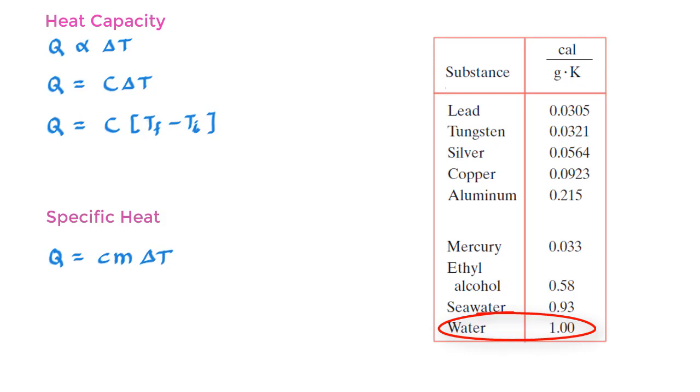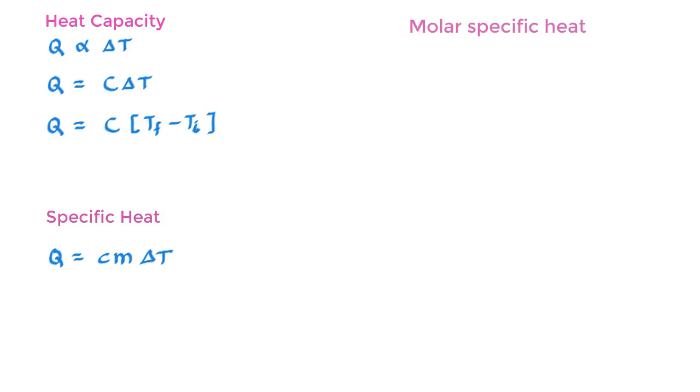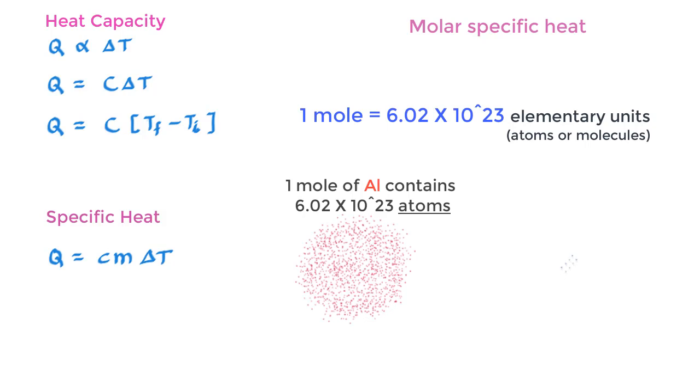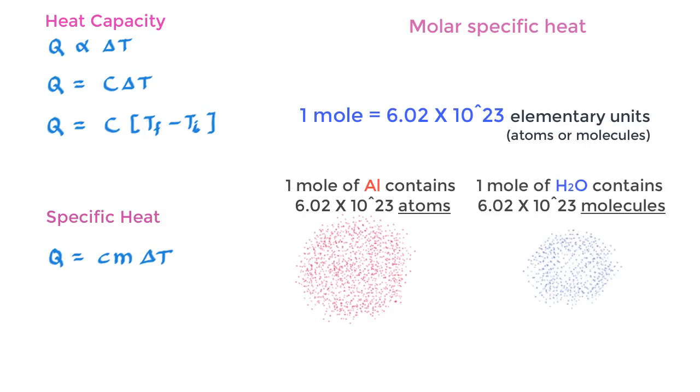Molar specific heat is yet another way of expressing heat capacity or specific heat. What we do is that instead of taking a unit of mass of the substance, we take a mole of the substance. If you remember your chemistry, a mole of substance is nothing but 6.02 times 10 to the power 23 elementary units of substance, where elementary unit is nothing but atoms or molecules. Thus 1 mole of aluminium is a collection of 6.02 times 10 to the power 23 atoms of aluminium, and 1 mole of water will be 6.02 times 10 to the power 23 molecules of water.